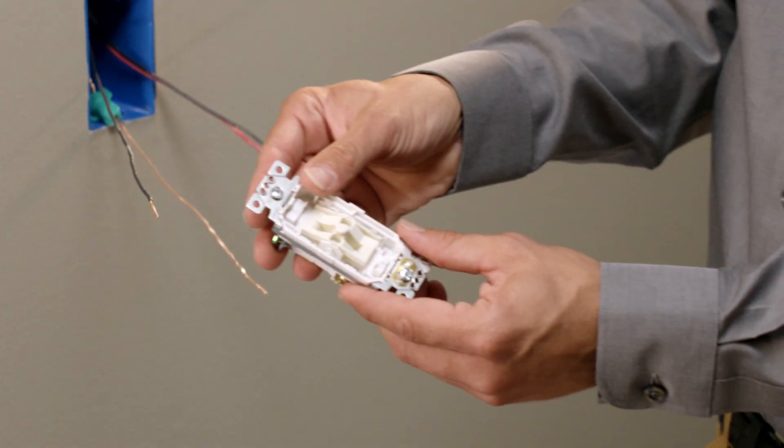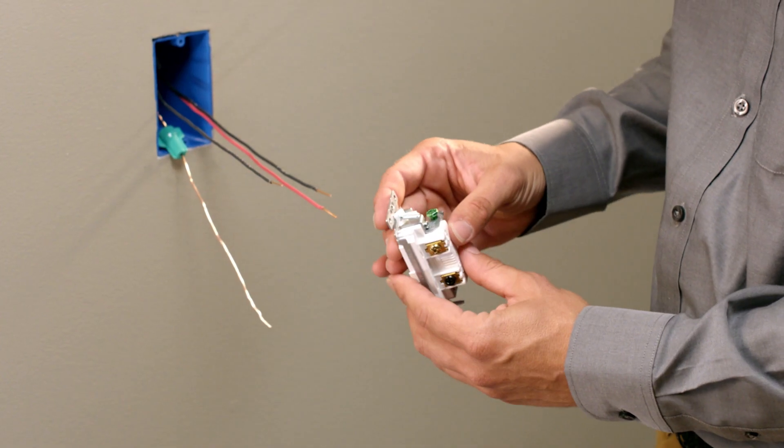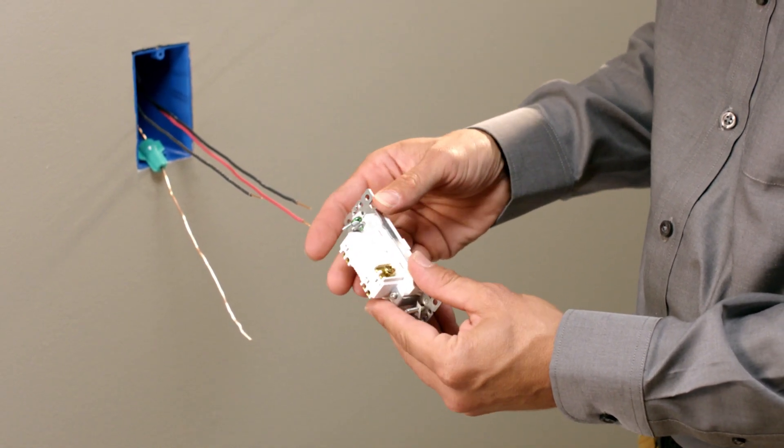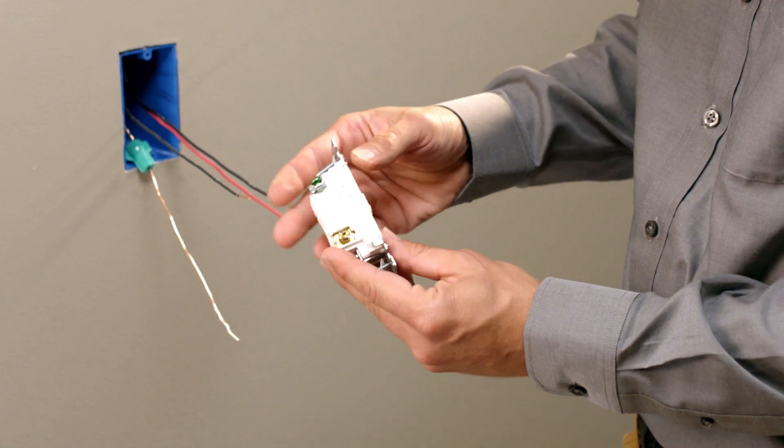The 3-Way Switch has three terminals. The top left is where the hot wire is terminated, the second terminal is where the neutral is terminated, and the third terminal is where the traveler wire is terminated.